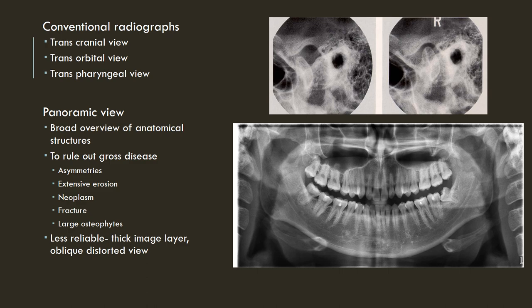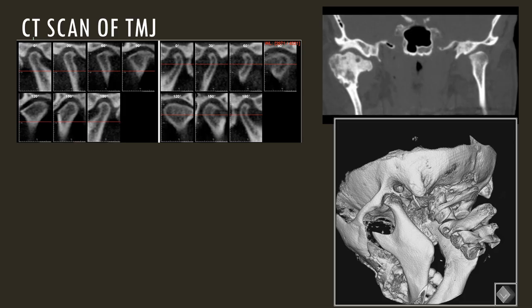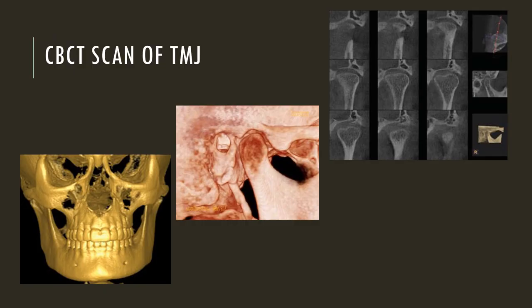An extension of the panoramic view using the same equipment is the TMJ open and closed view, which gives an idea of the location of the TM joint when the jaw is open as well as when the jaw is closed. The CT scan is reserved for serious diseases like neoplasia of the TM joint and can give a very good view of the osseous component. CBCT of the TMJ is similarly reserved for osseous component viewing where a disease process is suspected and a clearer view of the joint is required.